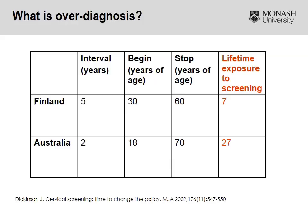Compared to what was being promoted in Australia: screening recommended from age 18 or first sexual intercourse, stopping at age 70, with a screening interval of two years. The lifetime exposure to screening in Australia was almost four times as high as it was in Finland.